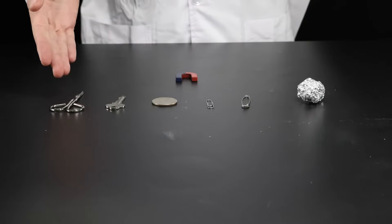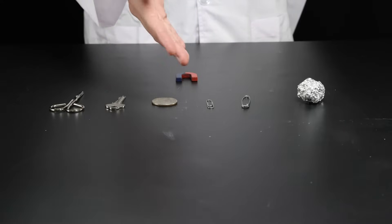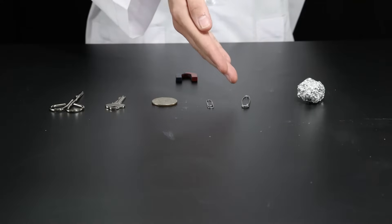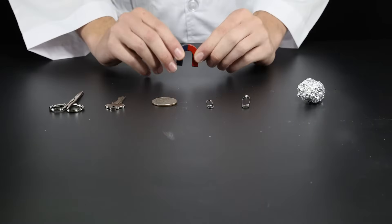Here we have scissors, a key, a half dollar coin, a paperclip, a safety pin, and a ball of aluminum foil. They're all made of metal.